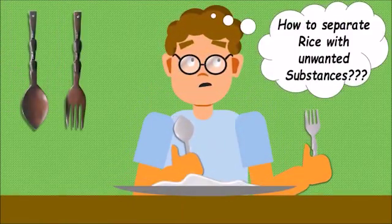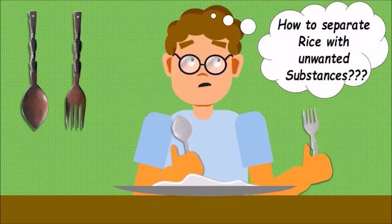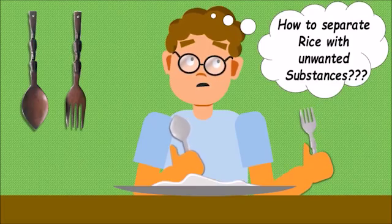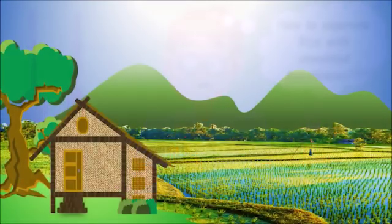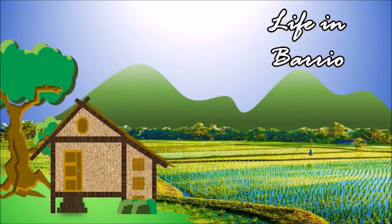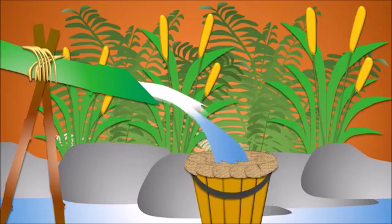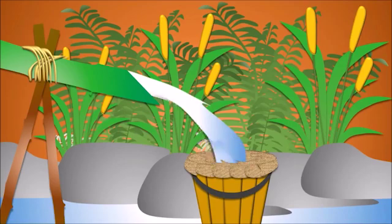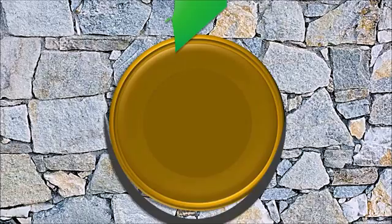You don't want these to get into your food, so you need to find a way to get rid of these unwanted substances and separate them from your rice. In another situation, in a barrio or province, to make sure that the water is clean, people use a clean cloth to filter the water, putting away the unwanted particles.